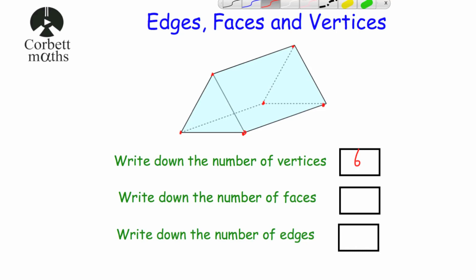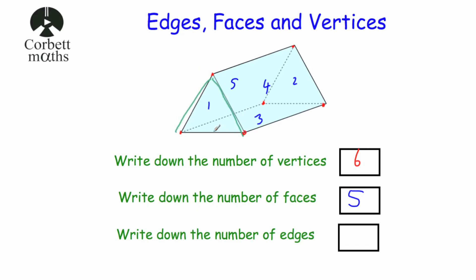Now the faces: the triangular prism has a triangle at the front and another triangle at the back — that's two. It's got a rectangle on the bottom — three — a rectangle on the right-hand side — four — and a rectangle on the left-hand side — five. So five faces altogether. For edges: three at the front triangle, three going back, and three at the back triangle gives nine edges. So a triangular prism has six vertices, five faces, and nine edges.